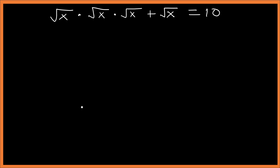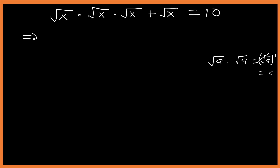Welcome to GDS online maths. Let's see how we can solve this question. We have square root of x times x, times x, plus square root of x. First of all, let's understand that square root of a times square root of a gives us a — it cancels. So square root of x times square root of x will simply be x.